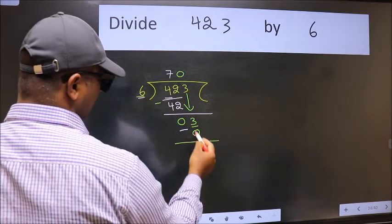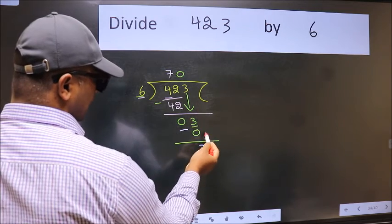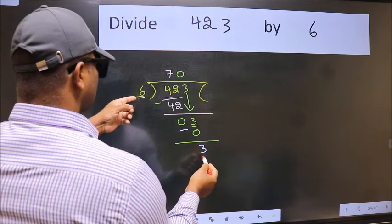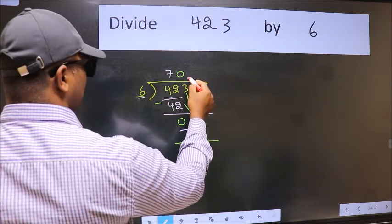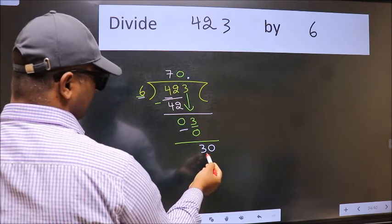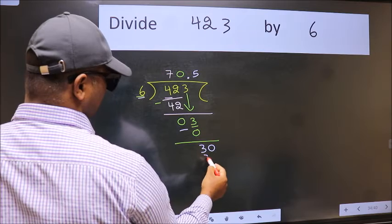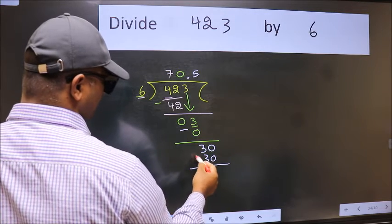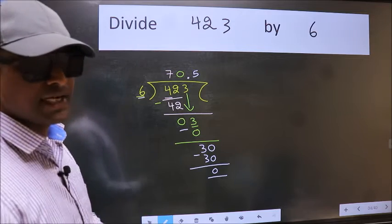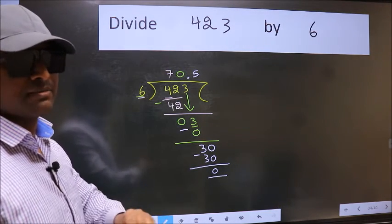Now we subtract we get 3. Over here we did not bring any number down and 3 is smaller than 6. So now we can put dot and take 0. So 30. When do we get 30 in 6 table? 6 times 5 is 30. Now we subtract we get 0. Did you understand where does the mistake happen? You should not do that mistake.